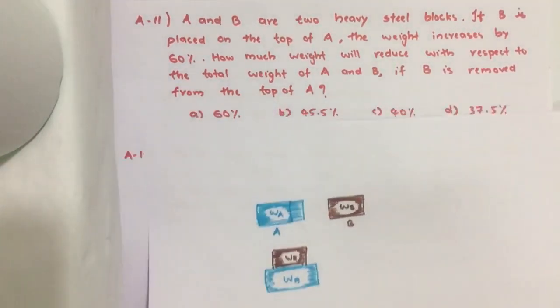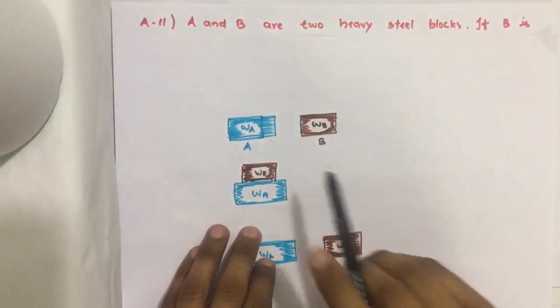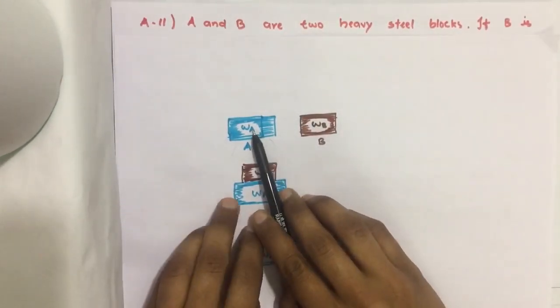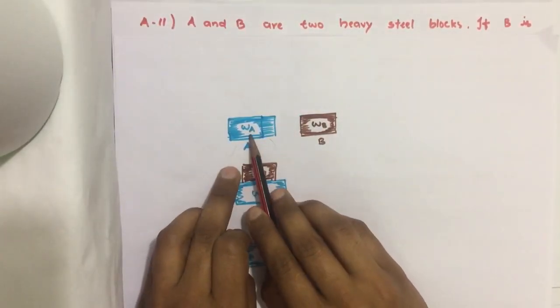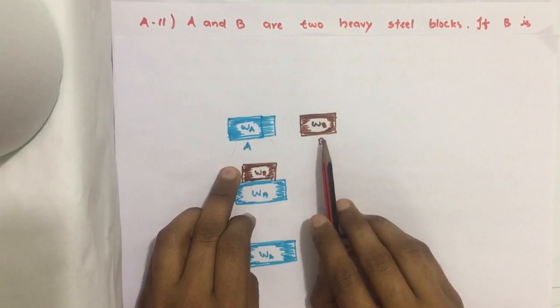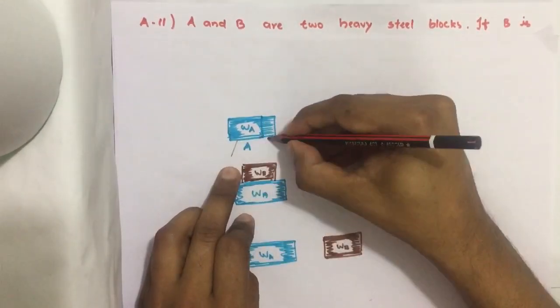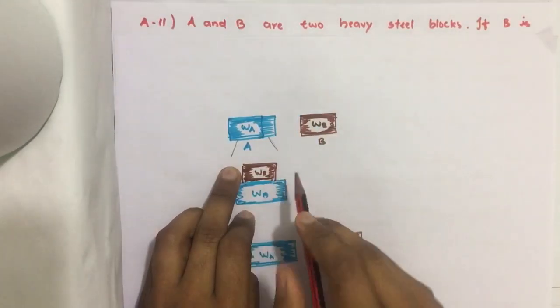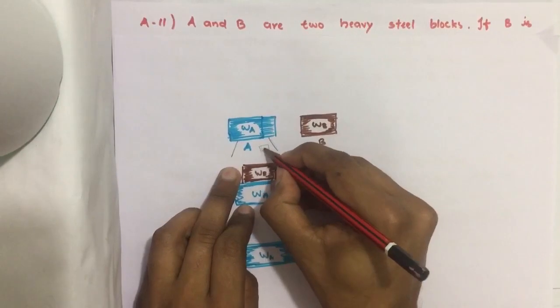Let us see how to solve this question. We have four options, and we have two blocks with weights WA and WB. Suppose I am keeping a weighing machine here, and we can see the reading. What will be the weight? It is WA.